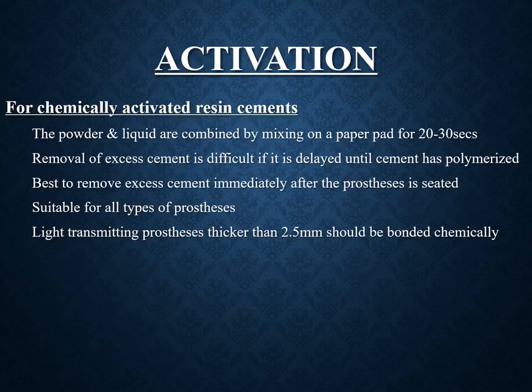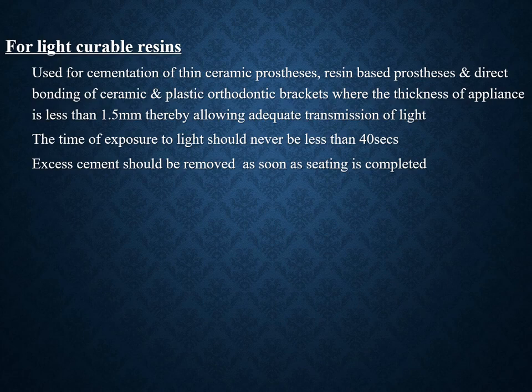For chemically activated resin cements, powder and liquid are combined by mixing on a paper pad for 20 to 30 seconds; excess cement is removed immediately after the prosthesis is seated. These are suitable for all types of prostheses, but light-transmitting prostheses thicker than 2.5 mm should be bonded chemically. Light-curable resins are used for cementation of thin ceramic prostheses, resin-based prostheses, and direct bonding of ceramic and plastic orthodontic brackets where appliance thickness is less than 1.5 mm, allowing adequate light transmission. Light exposure time should never be less than 40 seconds.